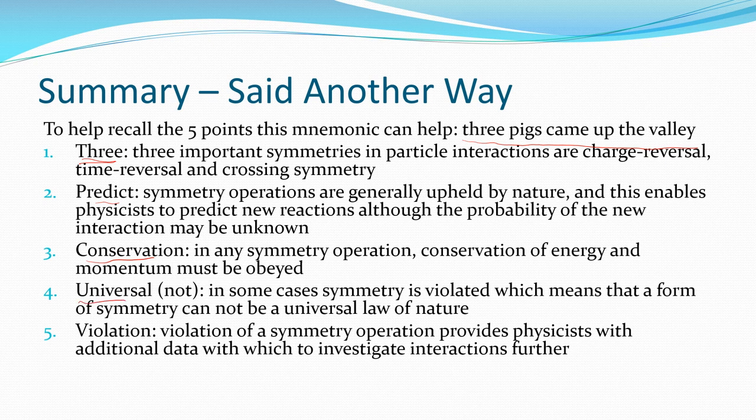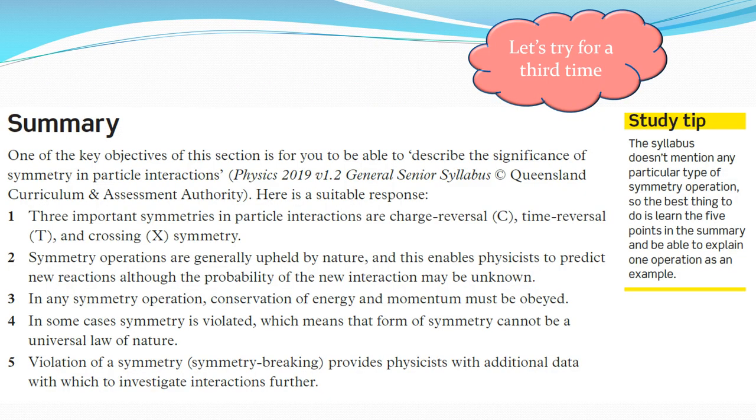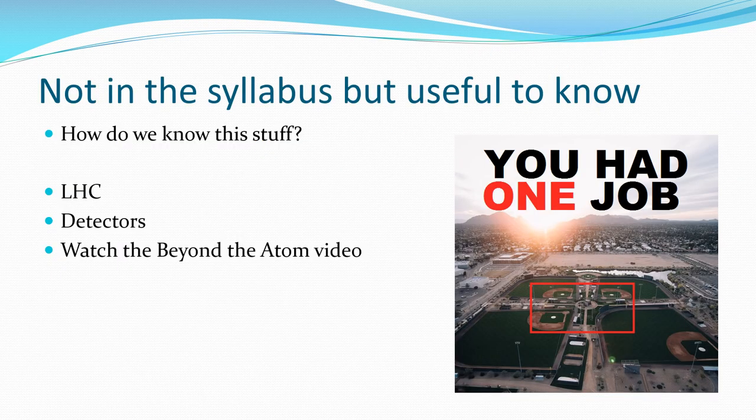Up, so that's universal so not universal so there are a couple of cases where symmetry is violated and this tells us that there's more work we need to do in this area. We're literally at the cutting edge of what we really understand here. And this violation just gives us evidence that we need to investigate this further and we start to interrogate those interactions a bit further and work out why the symmetry is violated. Another way to put it here which simply says the same thing. We have the three types of symmetries. Symmetry operations are generally upheld in nature but there are some examples which gives us more work to do.